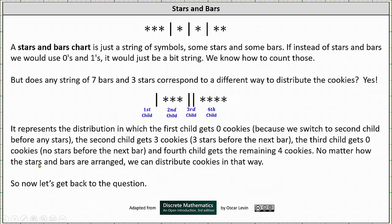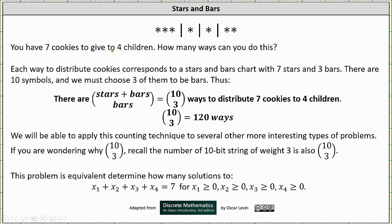So no matter how these stars and bars are arranged, we can distribute cookies in that way. So now let's get back to our question. Again, you have seven cookies to give to four children. How many ways can you do this?